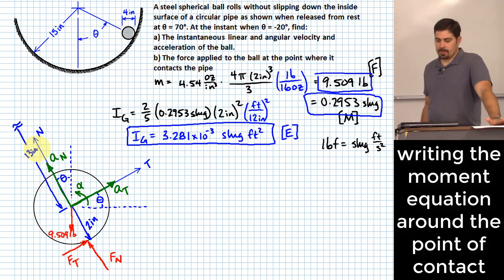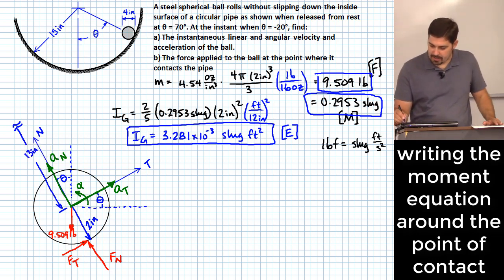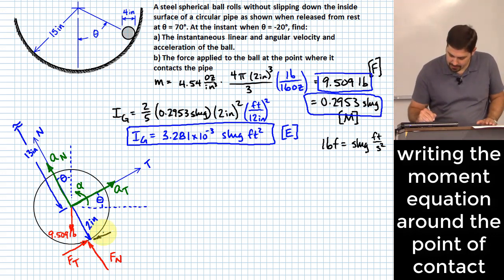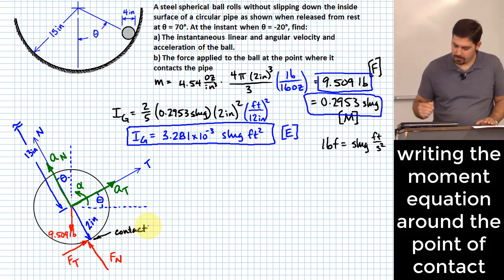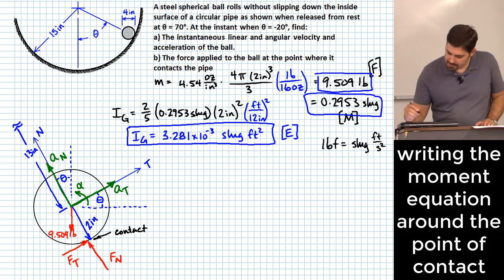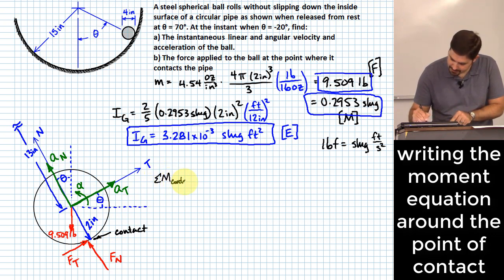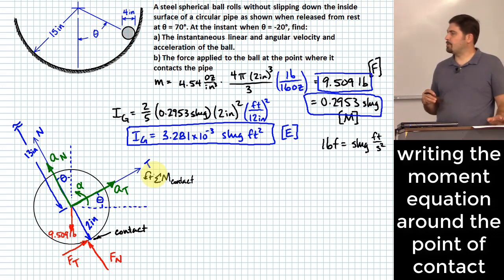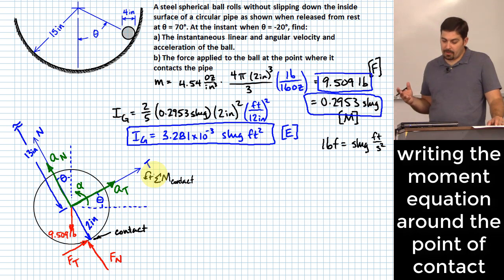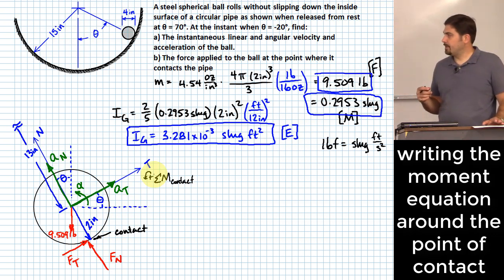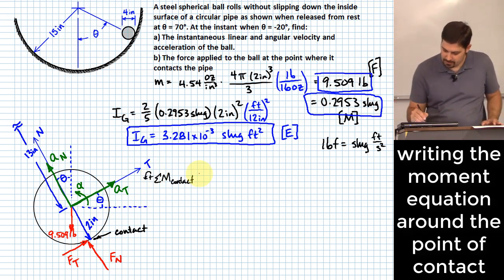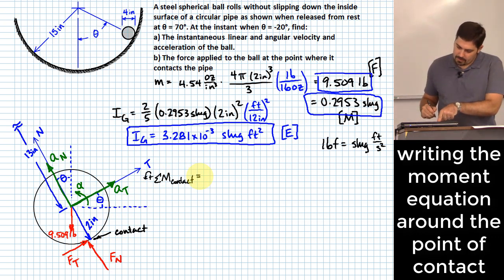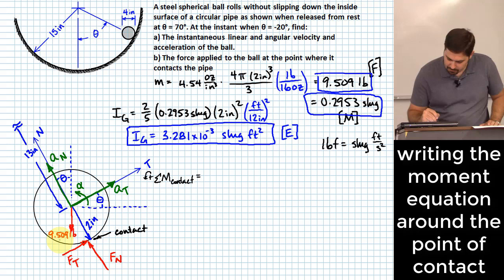Now I'll write a moment equation about the point of contact — that's where the ball touches the inside of the pipe. Choosing this point means I don't need to know FN or FT, since they both pass through it. Taking counterclockwise positive, the only force creating a moment is the weight: 9.509 pounds.